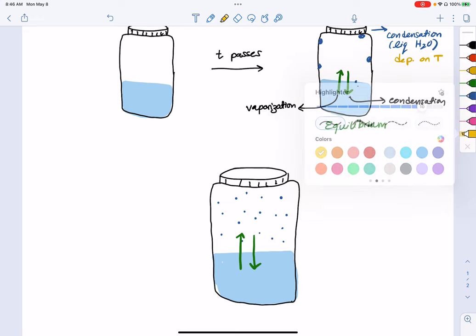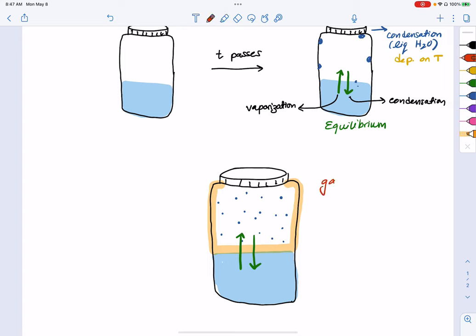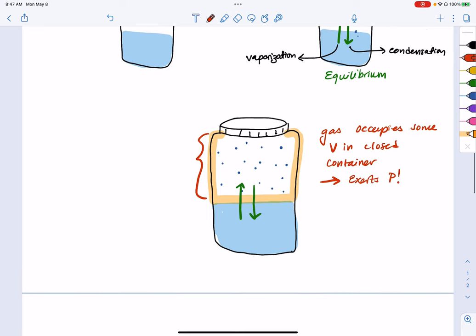So since we have particles that are up here in this region of our system, we have a gas that occupies some volume in a closed container. That means that that gas exerts pressure. So we call the gas, the vapor found or collected above a liquid in a closed system or a closed container, the vapor pressure or P_vape of that liquid.